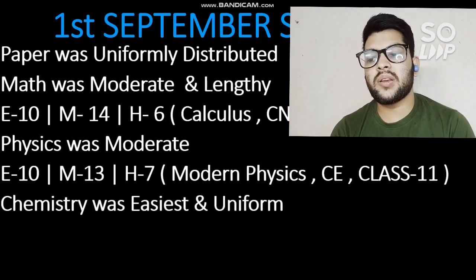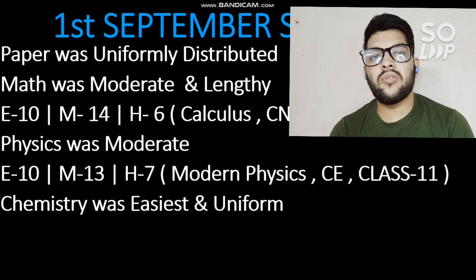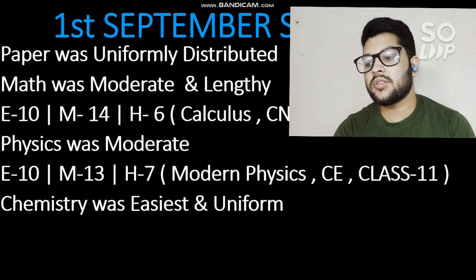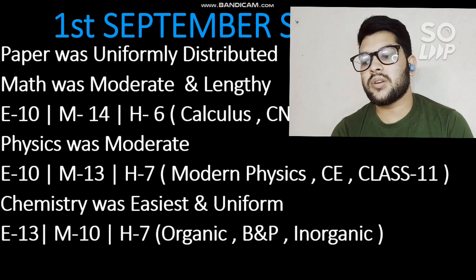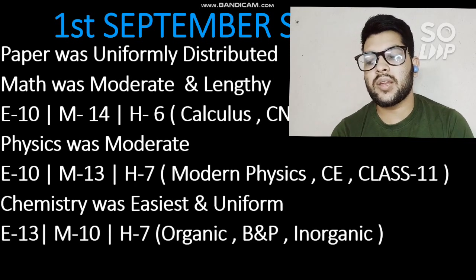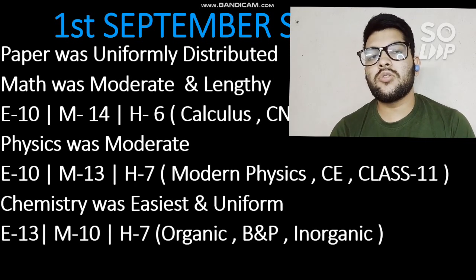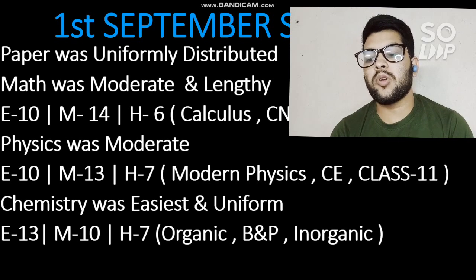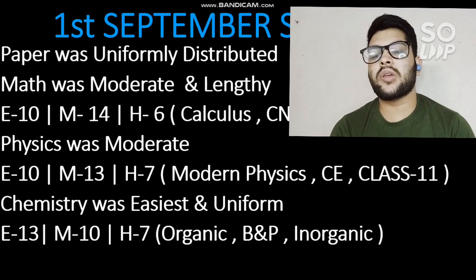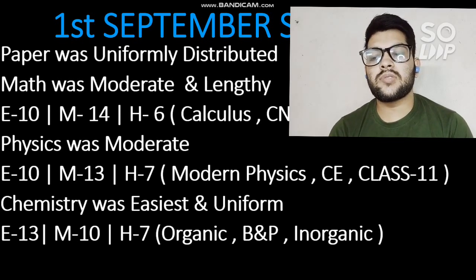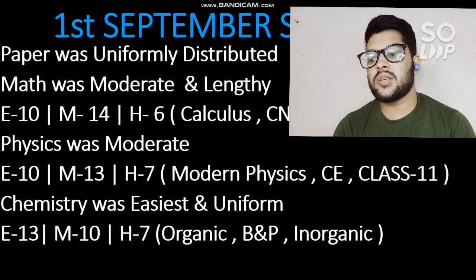For Chemistry, it was as expected the easiest, with all types of topics covered. There were 13 easy, 10 moderate, and 7 hard questions. Questions were asked from organic topics such as Biomolecules, Polymers, and Name Reactions — covering all types of organic chemistry topics from NCERT. Numerical questions were asked from Physical Chemistry.